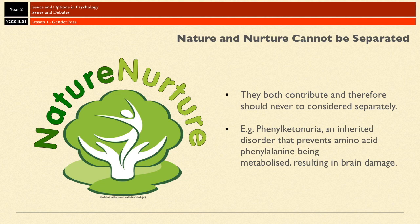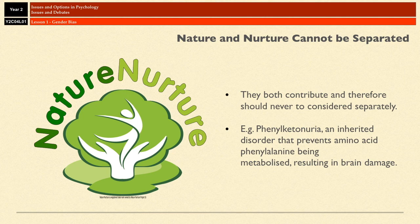An example is phenylketonuria — an inherited disorder that prevents the amino acid phenylalanine being metabolised, resulting in brain damage and learning difficulties. However, if the condition is detected at birth, an infant can be given a diet devoid of that amino acid, and the brain damage is averted. So if prevention of a genetic condition can be achieved through an environmental manipulation — changing the diet — then the condition isn't purely genetic. The condition is therefore not due to nature or nurture alone; it's an interplay between both.